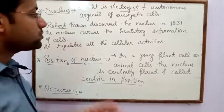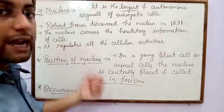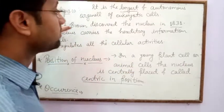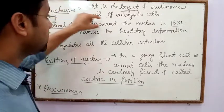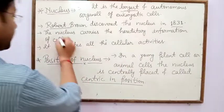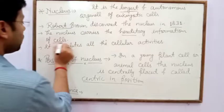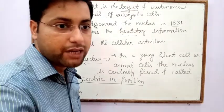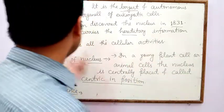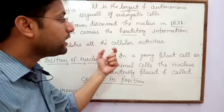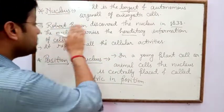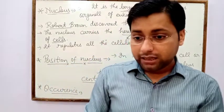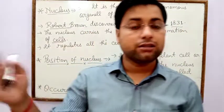Robert Brown discovered the nucleus in 1831. The nucleus carries the hereditary information of cells. Hereditary information is the character or information which is transmitted from parents to their offspring or progeny. The nucleus carries parental hereditary information from one generation to the next generation.